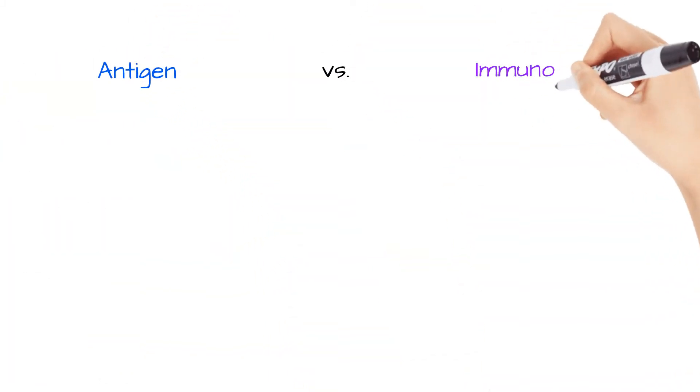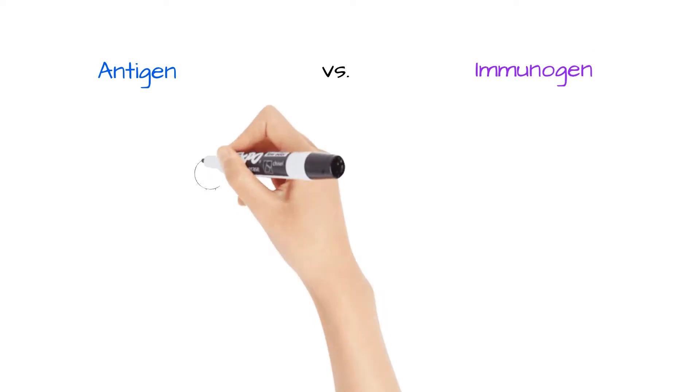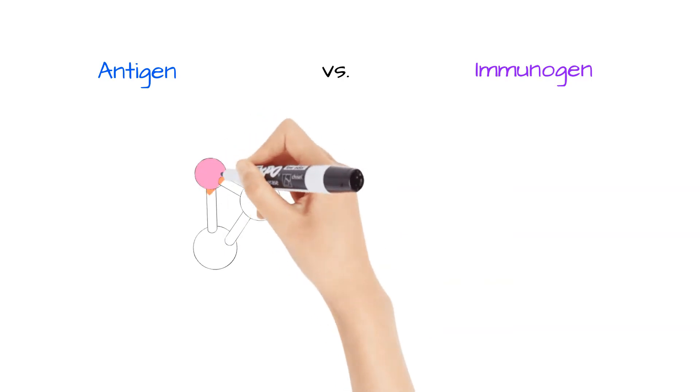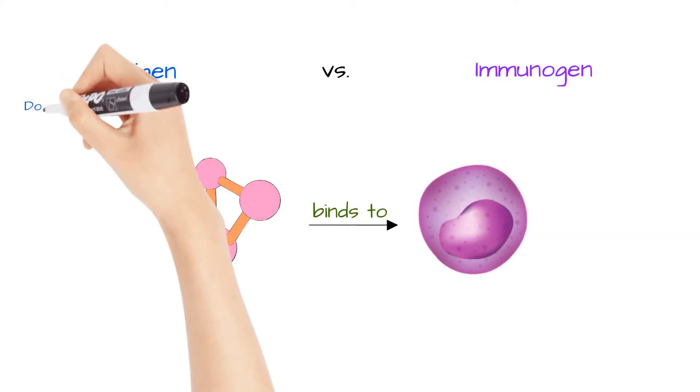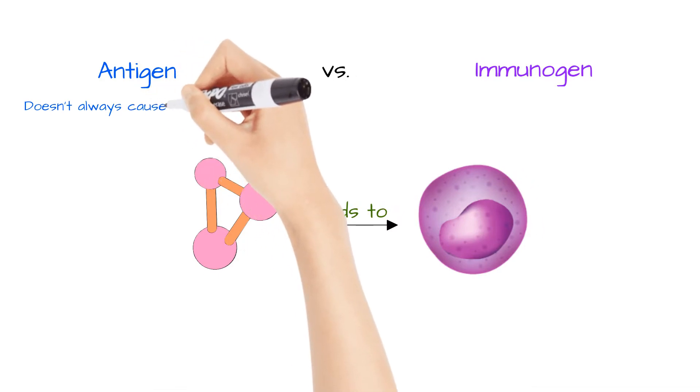Antigens are sometimes termed interchangeably with immunogens, but it's important to note that they have differences. An antigen is a molecule or molecular fragment that joins with antibodies or antigen receptors on B and T lymphocytes, but it doesn't always cause an immune response.